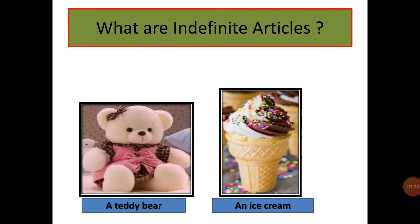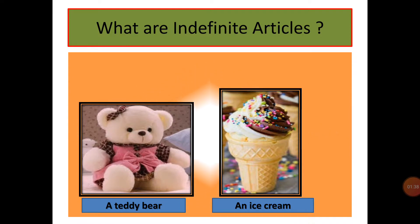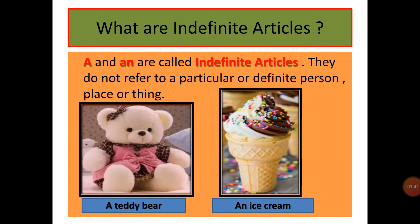First of all, we will learn what are indefinite articles. So students, a and an are called indefinite articles. They do not refer to a particular or definite person, place, or thing. For example: a teddy bear, an ice cream.